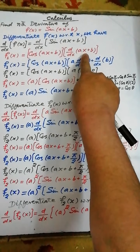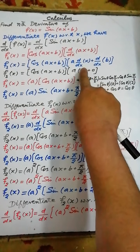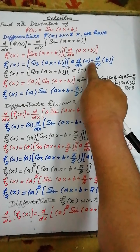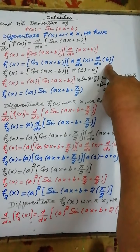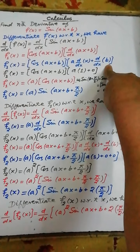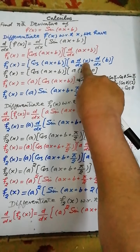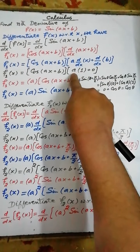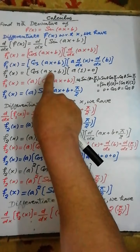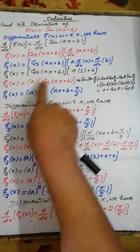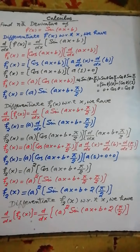The derivative of ax + b is equal to a multiplied by the derivative of x with respect to x, plus the derivative of b with respect to x. Since b is constant, its derivative is 0, and the derivative of x with respect to x is 1. So 1 × a + 0 = a. Therefore, a × cos(ax + b) = a·cos(ax + b).